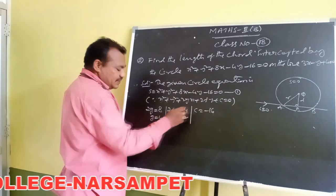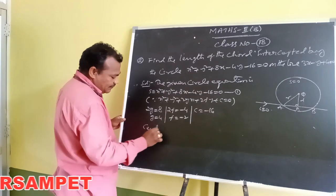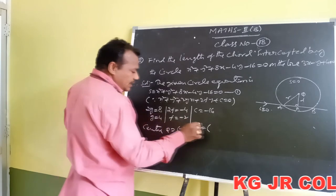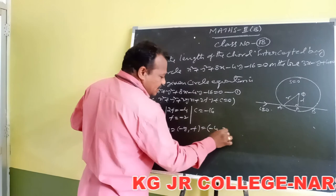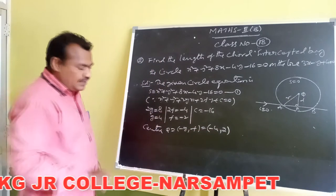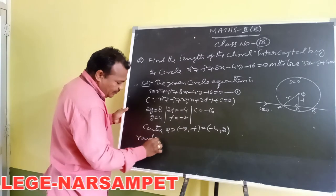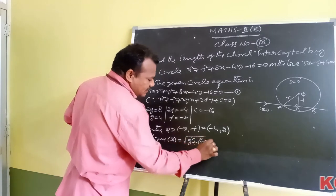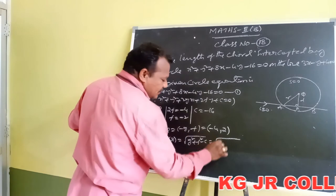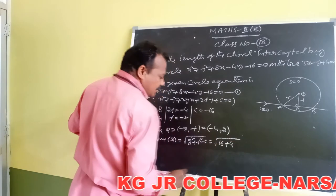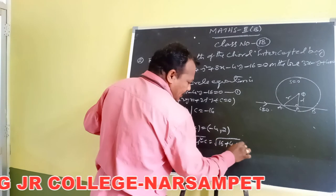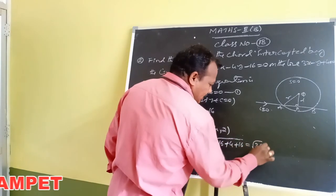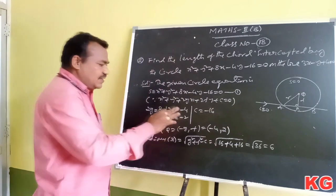The center coordinates Q = (-g, -f) = (-4, 2). The radius r = √(g² + f² - c) = √(16 + 4 + 16) = √36 = 6. So the radius of the circle is r = 6.